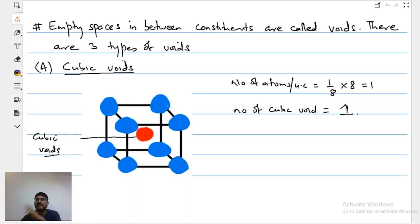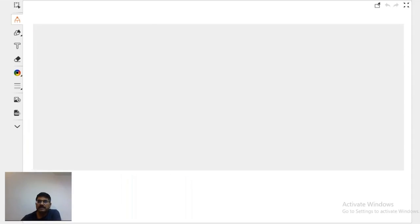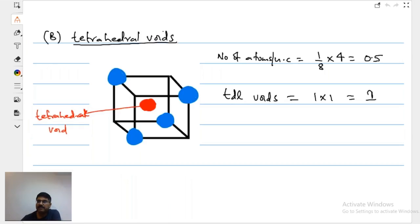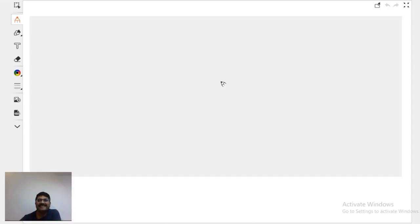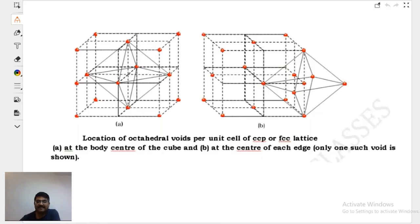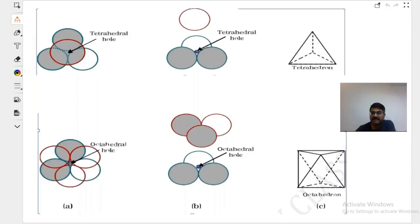So if you remember, we discussed that voids are going to be of two types. Let us start. One is going to be the cubic, the second is going to be tetrahedral void. This is going to be octahedral void. That has already been discussed.